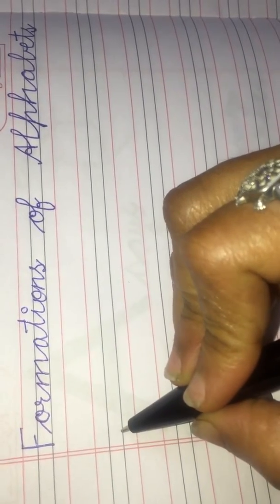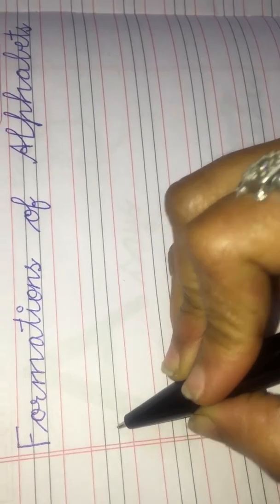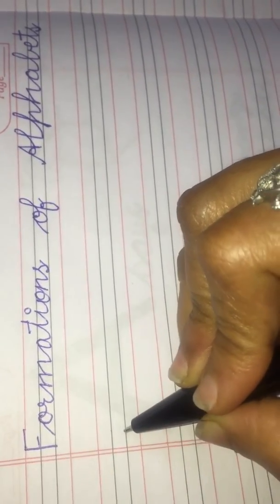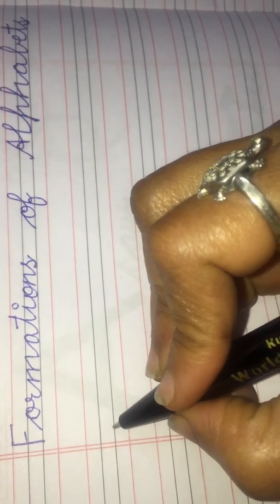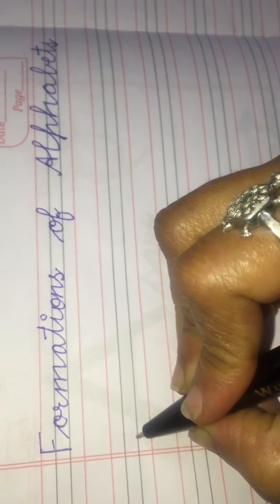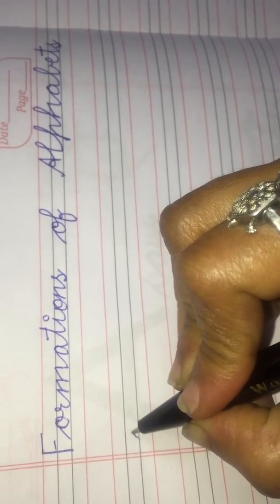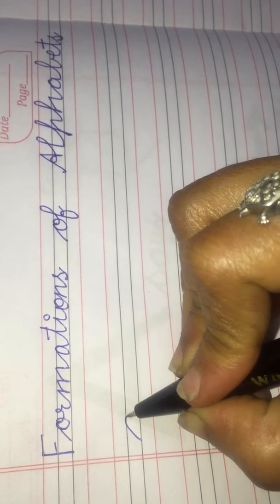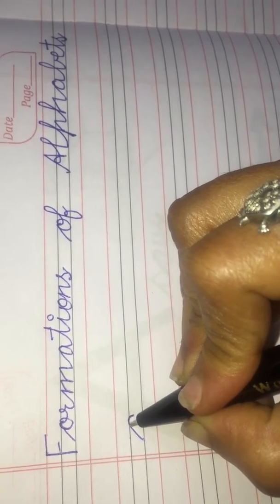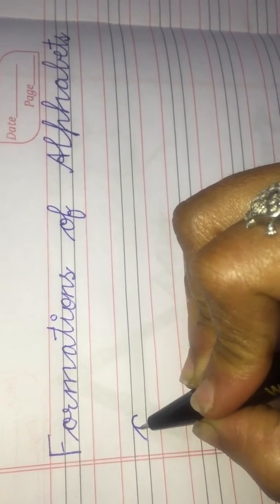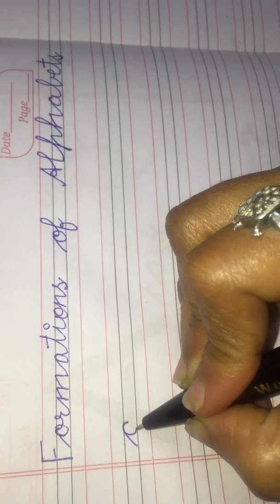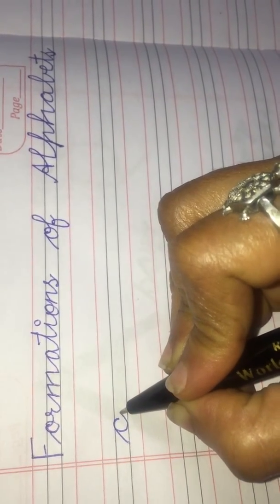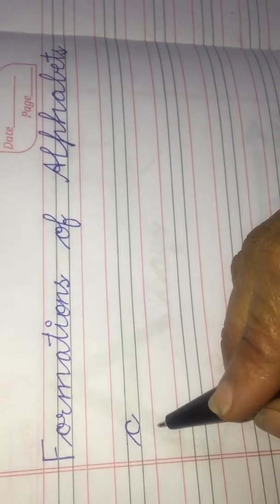Put your pencil on the third line. This is the third line — first, second, and third. Let's start from the third line. Make a slant line, go up, touch the line, come down, go back and make C. Touch the lower line and go up. This is letter C.